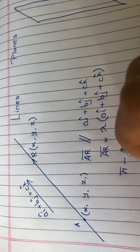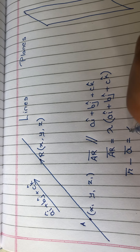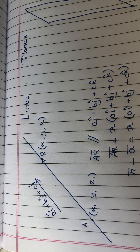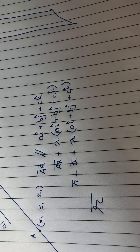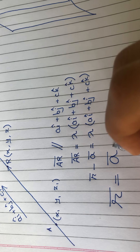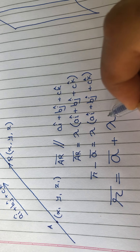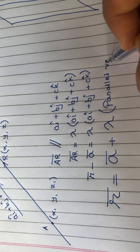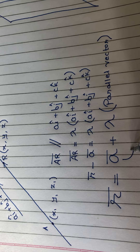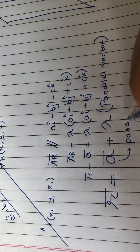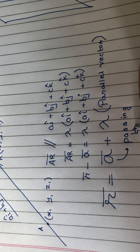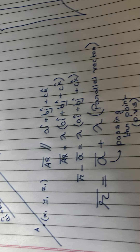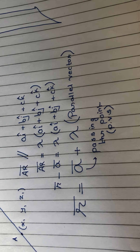The two vectors are parallel, so r̄ minus ā equals lambda times (ai cap plus bj cap plus ck cap). Finally, the vector equation of a line is: r̄ = ā + λ(parallel vector). Here λ is multiplied with the parallel vector, and ā is the position vector of the passing through point. This is the vector equation of the line.